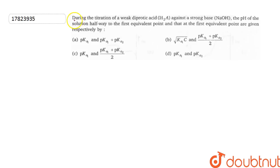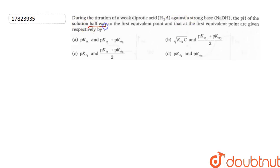In this question, we have been told that during the titration of a weak diprotic acid against a strong base NaOH, the pH of the solution halfway to the first equivalent point and at the first equivalent point are given respectively. So, we will determine the pH at both of these two points.